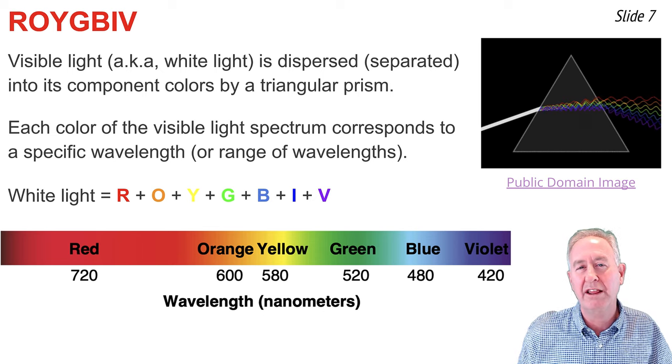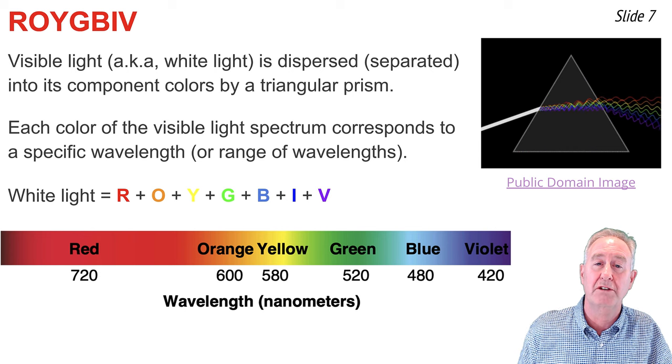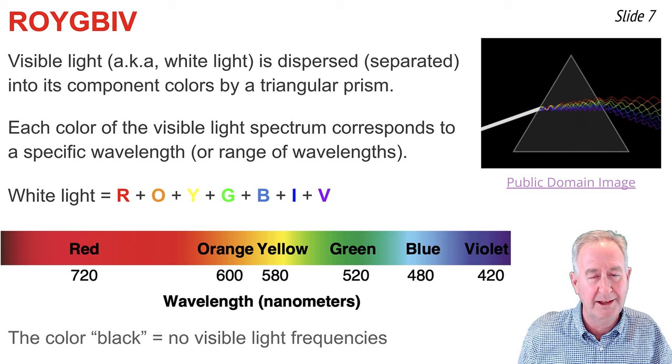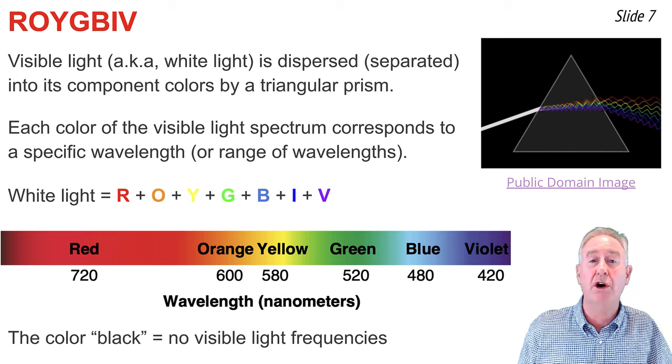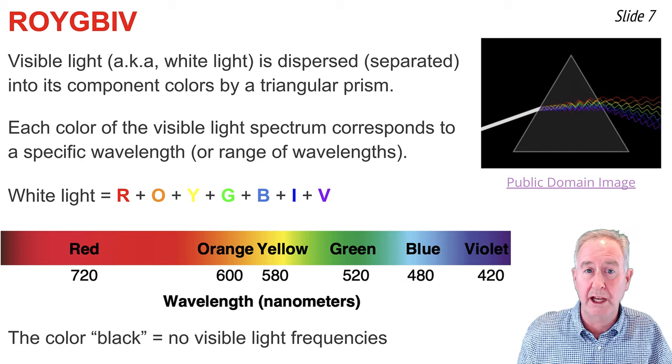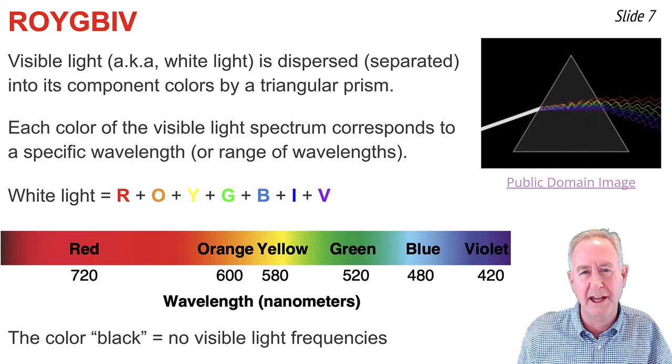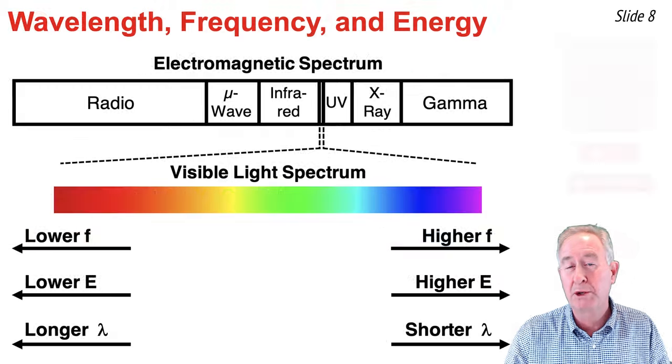So if white light is the presence of all of the colors of the visible light spectrum, what would black be? Well, black is simply the absence of all of the colors of the visible light spectrum. If there's no light, it appears dark to our eye, and thus we refer to that as black.